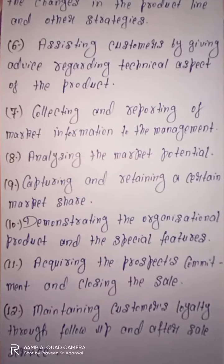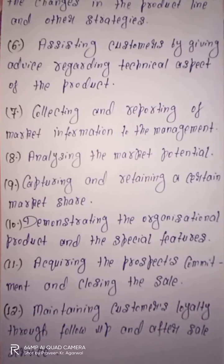Next one is demonstrating the organizational product and its special features. Organization ke jo bhi products hain, inko properly customer ke saath, ya unke saamne, demonstration dena — ki kis tarah se inki functioning rahti hai, aur kis tarah se ye customers ki problem ko solve kar sakte hain — uske regarding ek proper demonstration diya jata hai personal selling ke basis par. Aur phir unke special features bhi properly define kiye jate hain to the customers by the salesman.